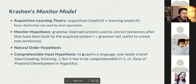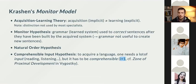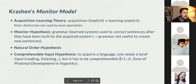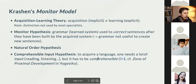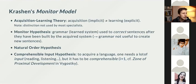Krashen also calls this I-plus-one. I is your current level of understanding, and plus one means new elements are added, but not I-plus-ten — just a little bit above your current level. This is very close to the concept of Vygotsky's zone of proximal development — the zone of what you can already do on your own, and just beyond that, the zone of what you can do with help.